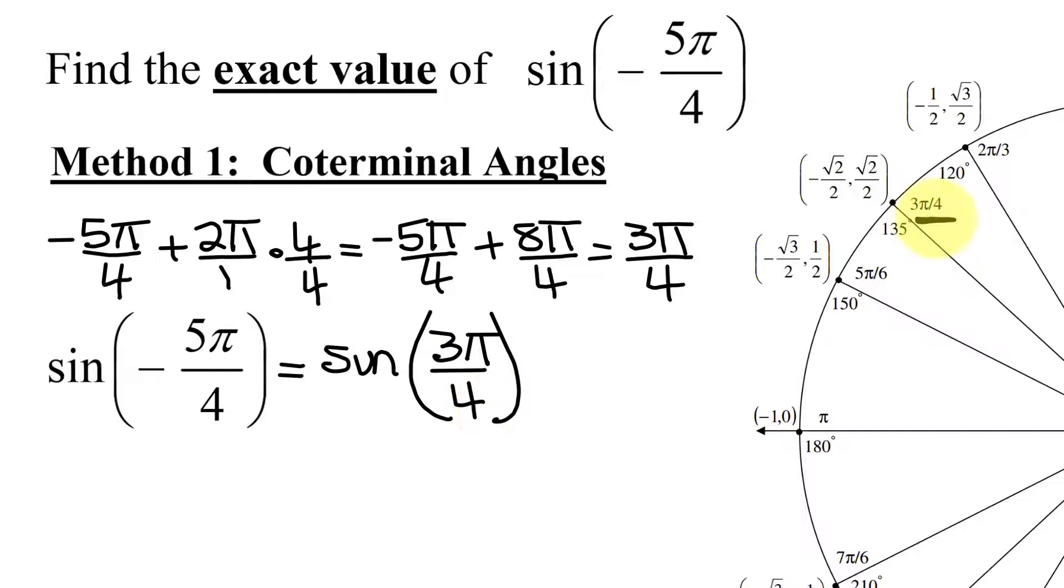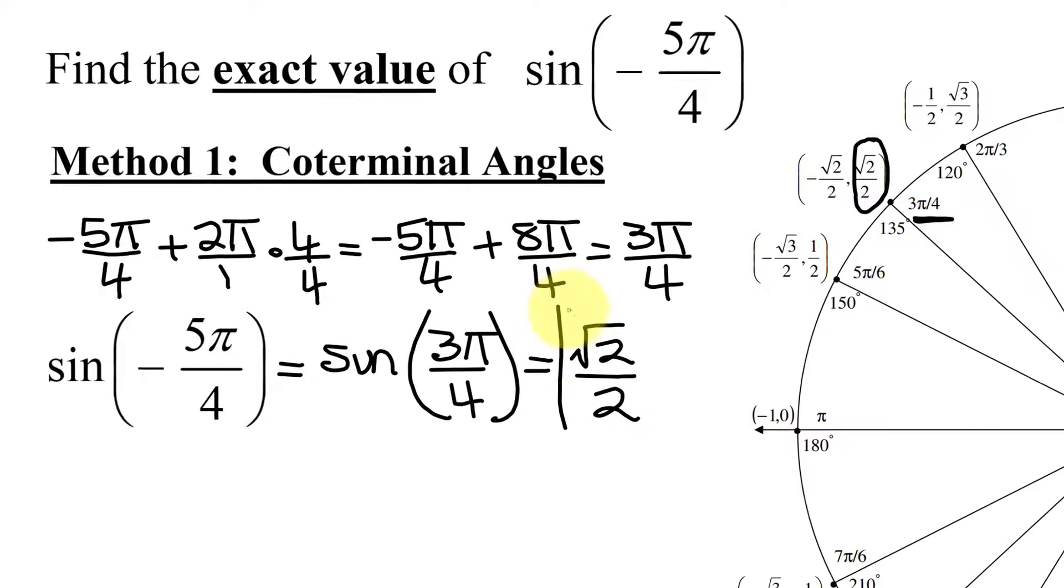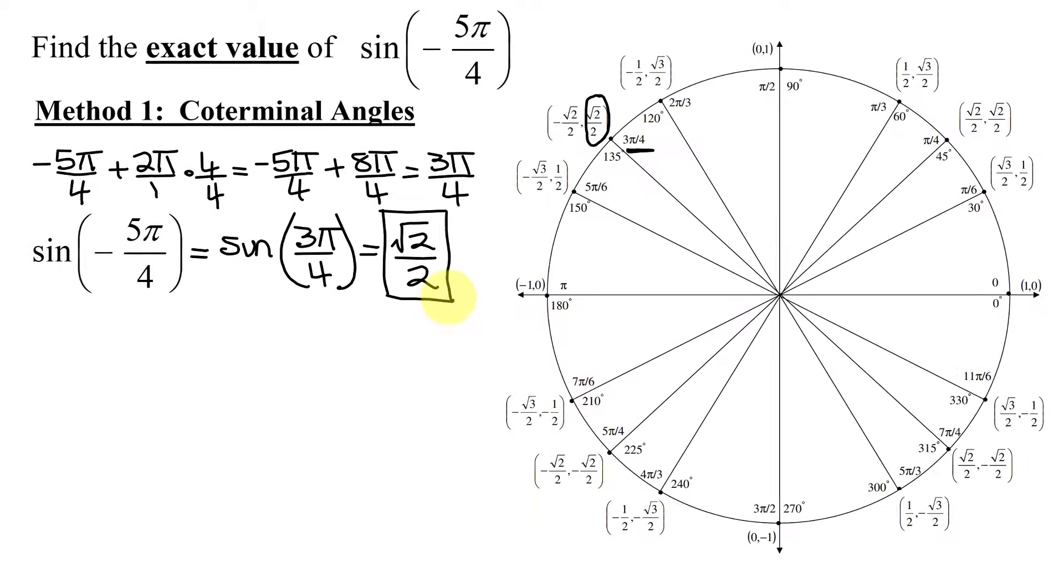And remember on the unit circle, the x-coordinate is the cosine of this angle. The y-coordinate is the sine of this angle. I need the sine of that angle, so my answer is the square root of 2 divided by 2. So the sine of negative 5π over 4 is the positive square root of 2 over 2.